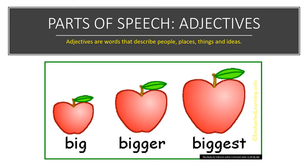There are eight parts of speech in English. Adjectives are one of those parts of speech. Adjectives are words that describe people, places, things, and ideas.